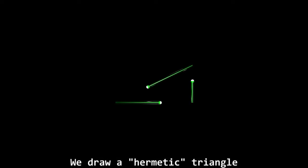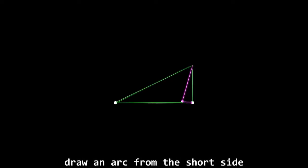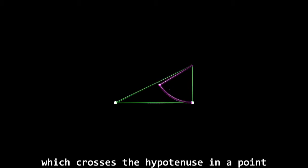Another method from Matila Gica in 1946. We draw a hermetic triangle, draw an arc from the short side, which crosses the hypotenuse in a point.